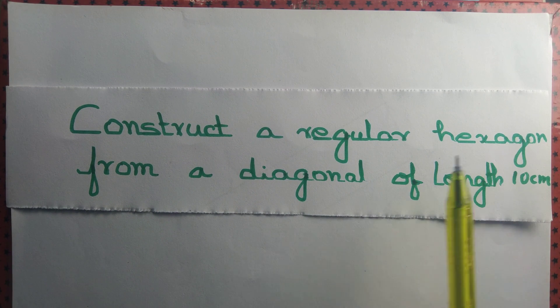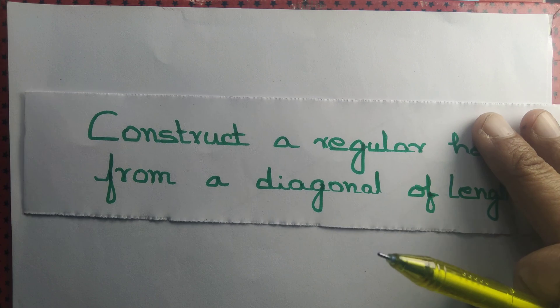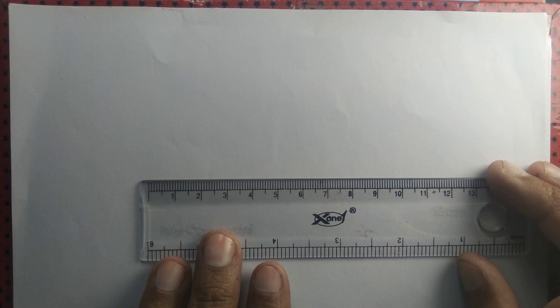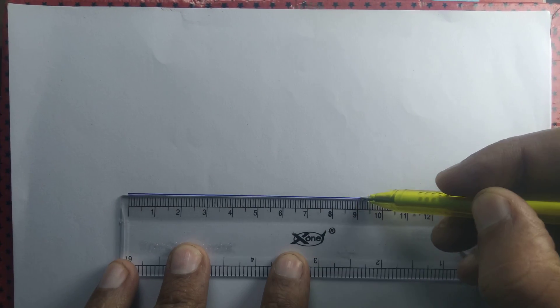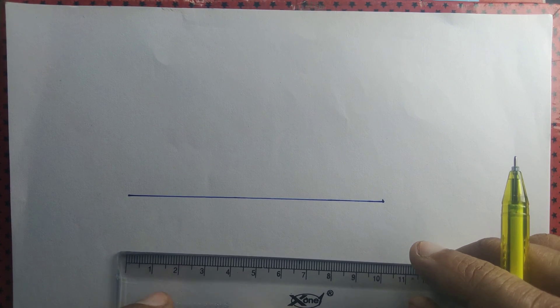Let's construct a regular hexagon from a diagonal of length 10 cm. We want to draw a regular hexagon such that its diagonal is equal to 10 cm. For that purpose, we draw a line segment measuring 10 cm.